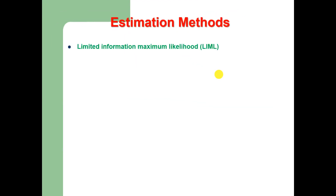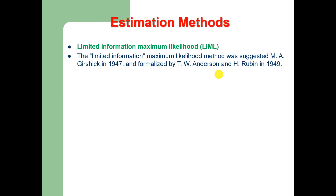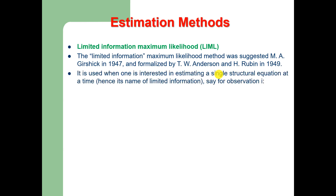There is also LIML — Limited Information Maximum Likelihood — a method for estimating the parameters in a simultaneous equation model. This method was suggested by Girshick in 1947 and formalized by T.W. Anderson and H. Rubin in 1949. The LIML method is used when one is interested in estimating a single structural equation at a time, hence its name 'limited information.'